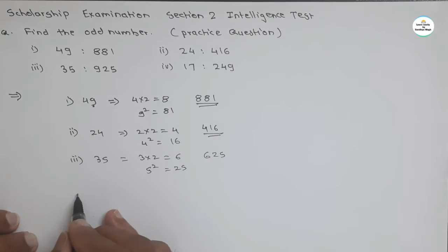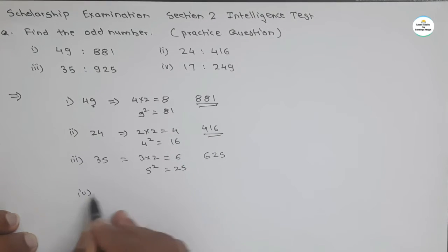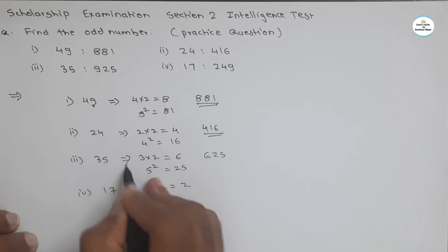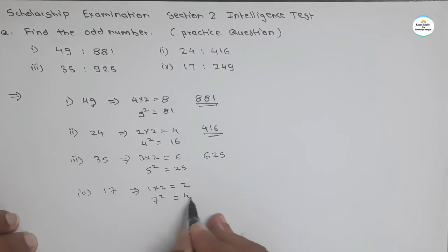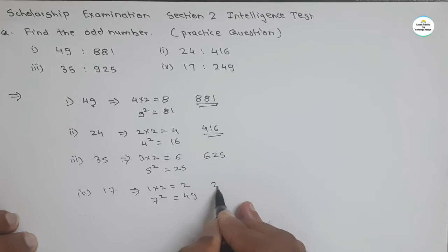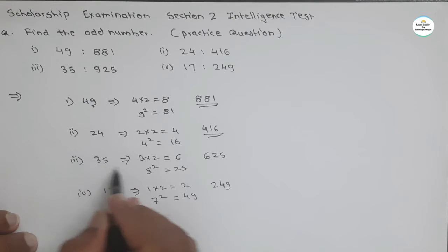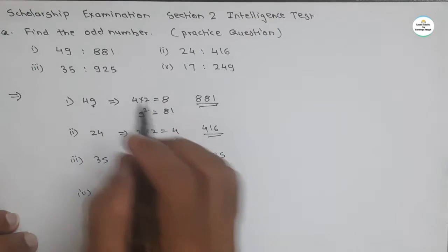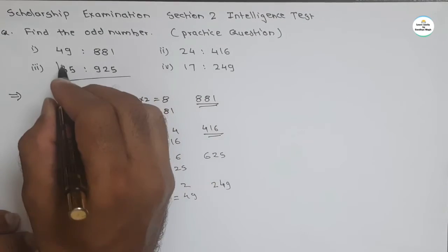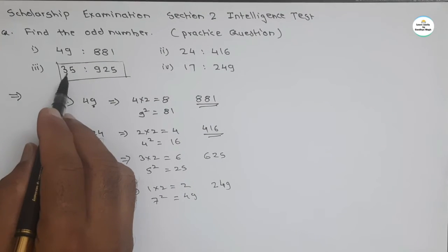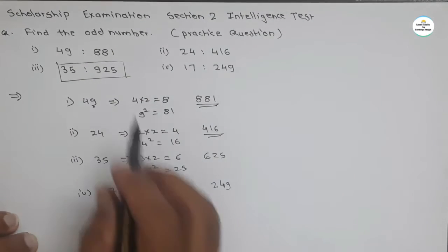And for the last one 17. If we multiply first digit by 2, we get 2. And square of 7, 49. We get 249. So this is 249. So here only the third number does not belong to this relation. So the third number is the odd number. So our answer will be the third number is odd number out of these 4.